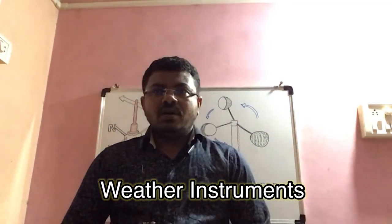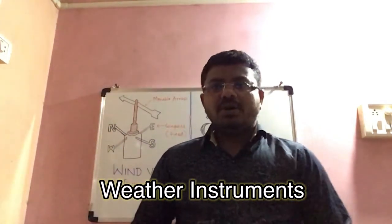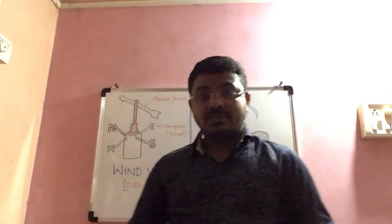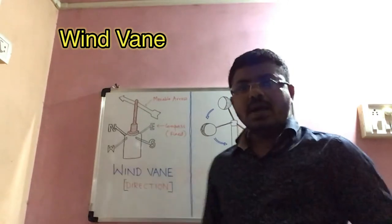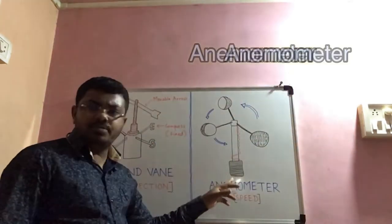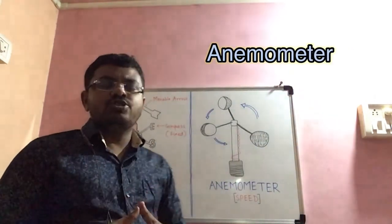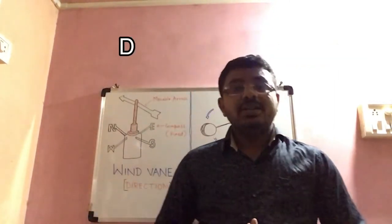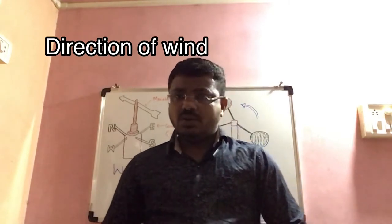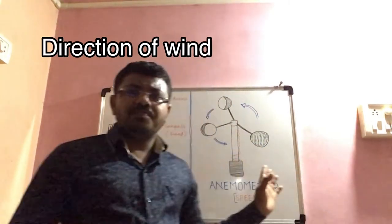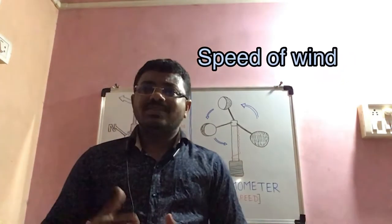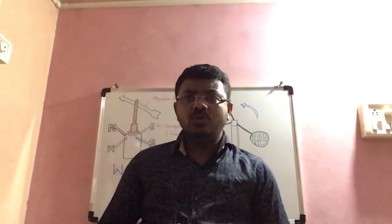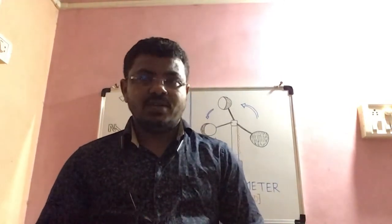Today we are going to learn about two important weather instruments: wind vane and anemometer. Both instruments are very important — the wind vane is used to find out the direction of the wind, whereas the anemometer is used to calculate the speed of the wind. We are going to learn how these instruments work together.